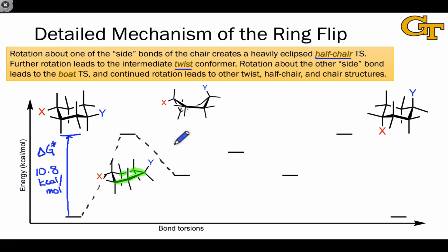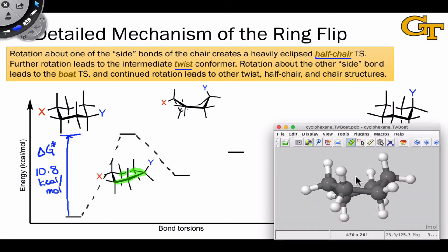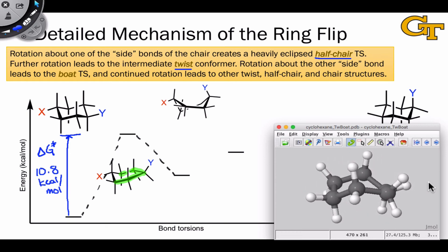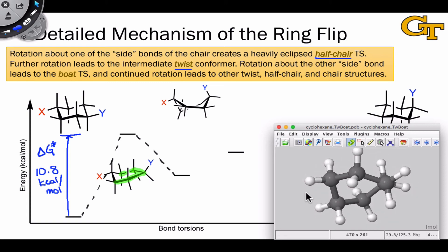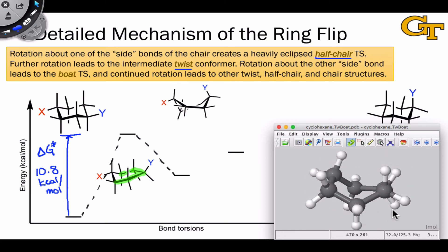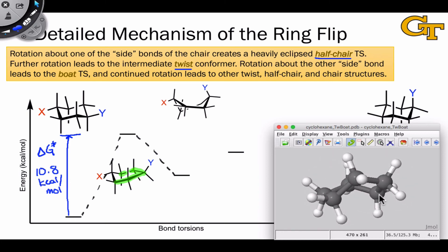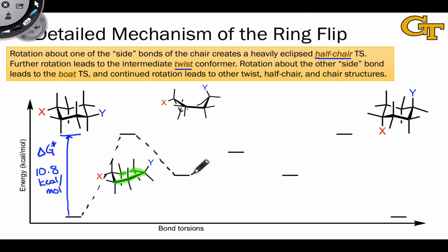At the twist conformer, we've actually relieved torsional strain enough that this is an energy minimum, as further rotation toward the other chair structure is going to introduce additional steric strain and torsional strain. The twist structure isn't quite as bad as the half chair, as the additional twisting has led to the alleviation of some torsional strain, with a slight opening up of the dihedral angle. Further rotation of the twist form puts the two ends of the molecule even closer together, resulting in some additional steric strain in the conformation called the boat.